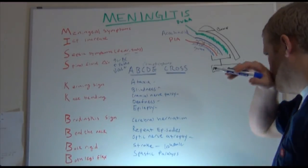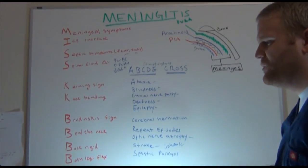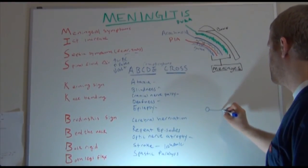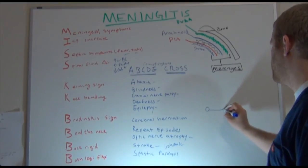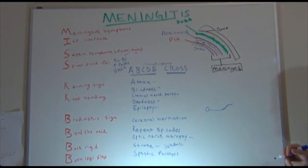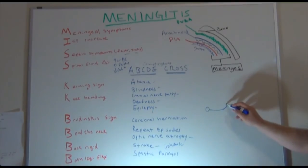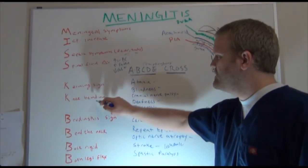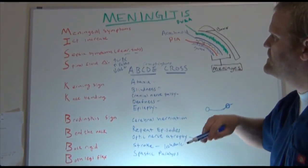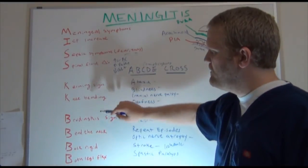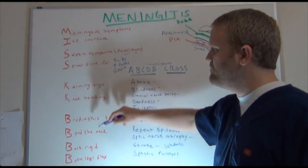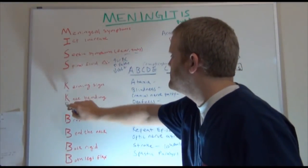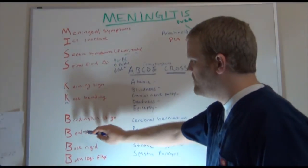There are also Kernig's sign and Brudzinski's sign. Kernig's sign: the patient is lying down, you lift their leg up and try to straighten it out, and they're going to have a severe amount of stiffness — they won't really be able to straighten that leg out. Remember Kernig's sign with the mnemonic: K for Kernig's, K for knee bending. Some of these meningeal symptoms are remembered with Miss KK BBBB.